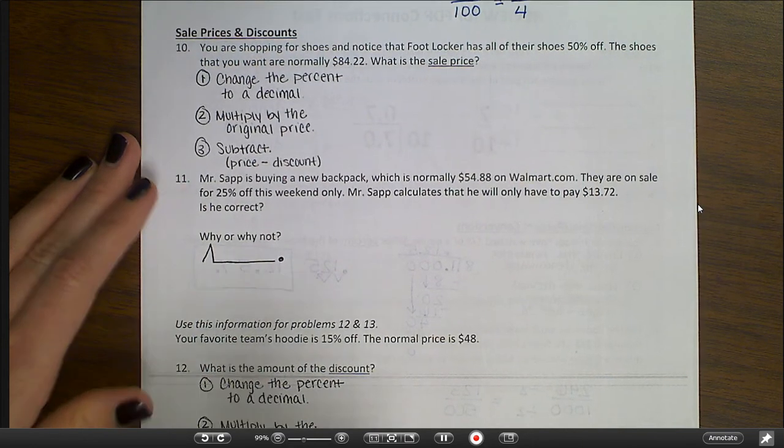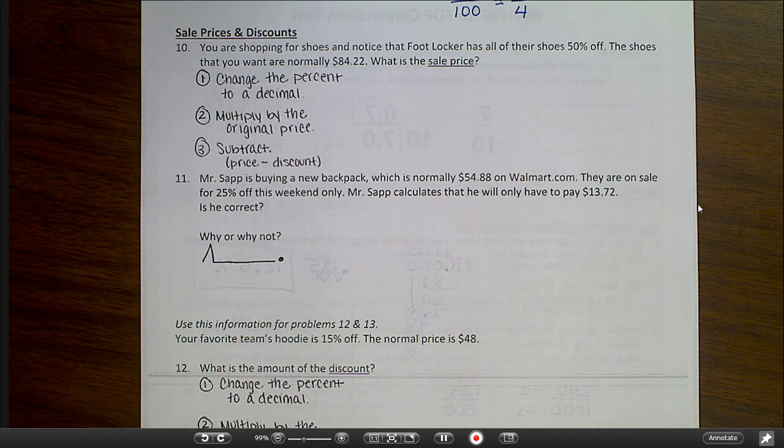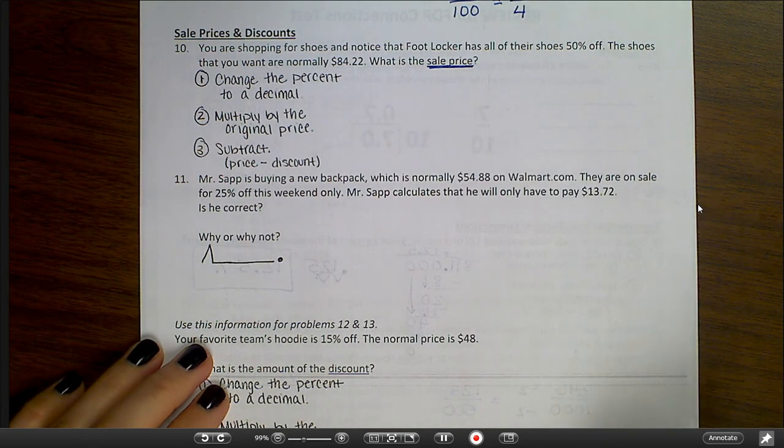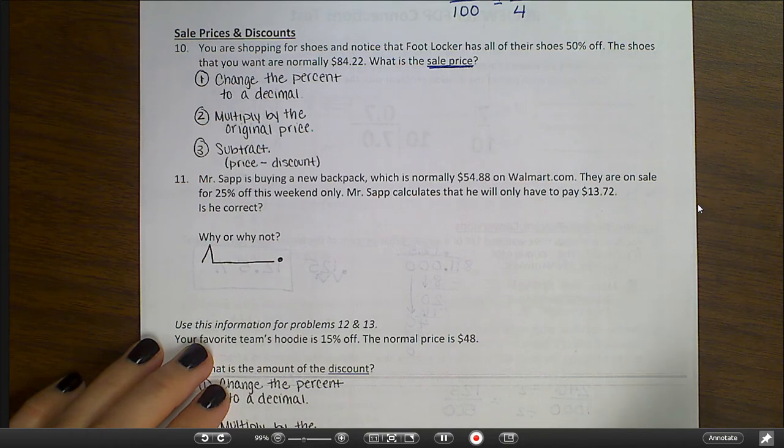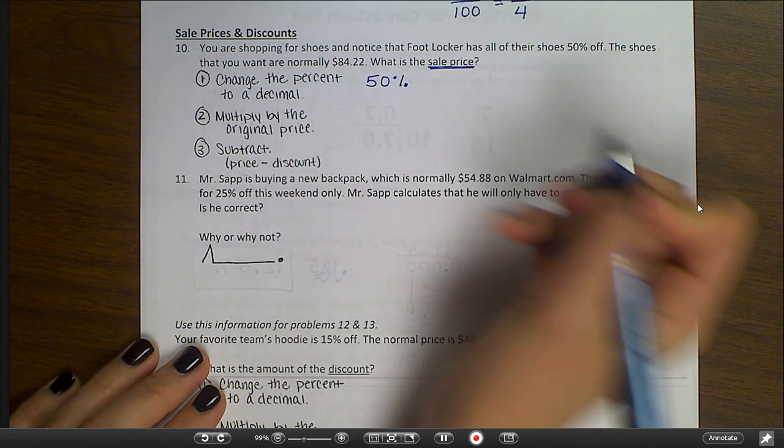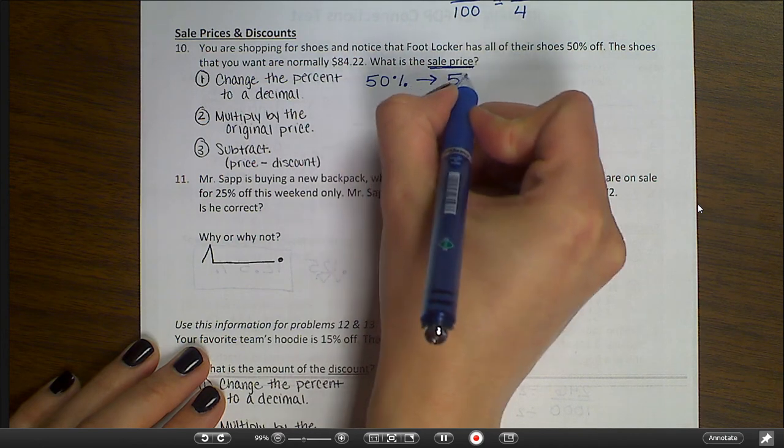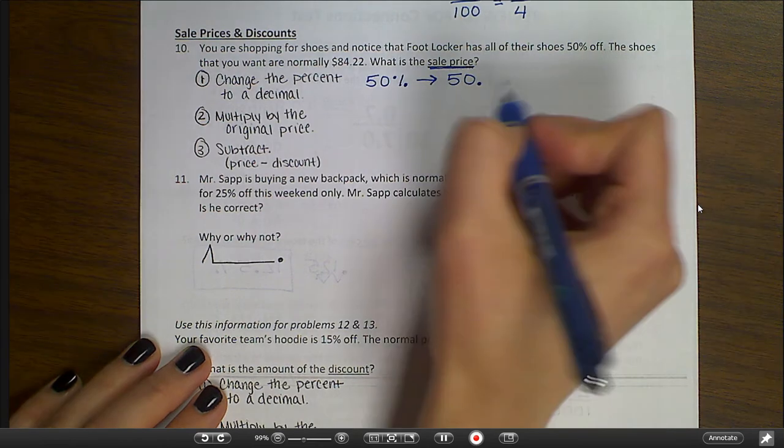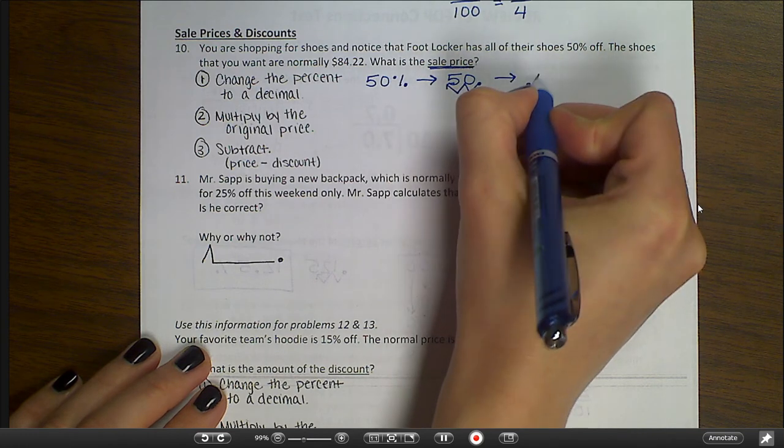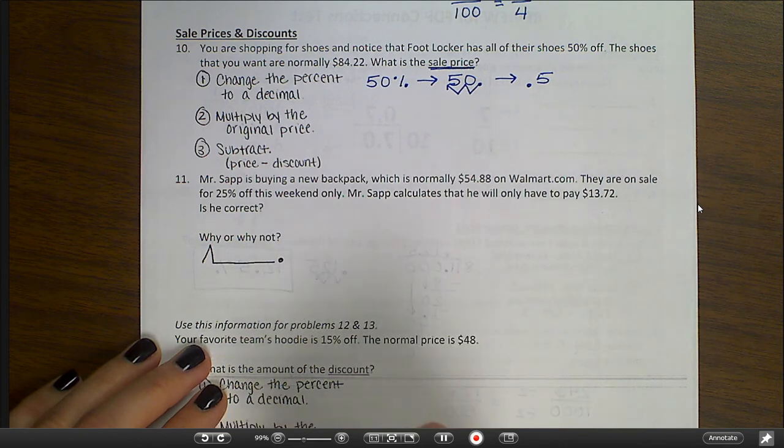The next part of your test will be sale prices and discounts. So number ten, you are shopping for shoes and notice that Foot Locker has all of their shoes 50 percent off. The shoes that you want are normally $84.22. What is the sale price? And remember, you need to pay close attention to whether they're asking for the sale price like they are here, or are they asking for the amount of the discount. So be very careful about what they're asking for. Step one is always to change the percent to a decimal. So 50 percent, I'm going to drop that percent sign.